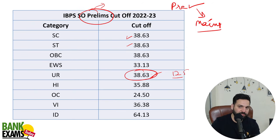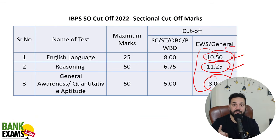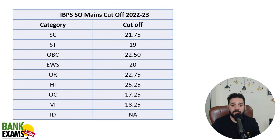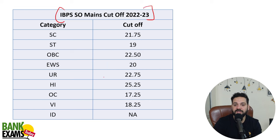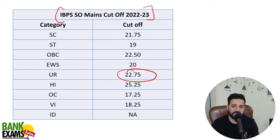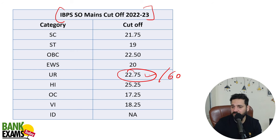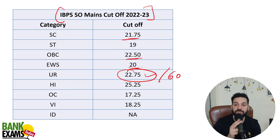Although 38 is the overall cut-off in the pre-exam, the sectional cut-off is really high. Meri hisab se 11 marks kai bar students se nahi cover hote. Now, mains ka cut-off — give it a close look, yeh bohut dhyan se dekhne wali cheez hai. General/unreserved category ka jo cut-off hai, that is 22.75 — yeh mains ka cut-off hai out of 60. SC category 21.75, OBC 22.50, EWS 20 — EWS category ka cut-off SC se bhi thoda kam hai.